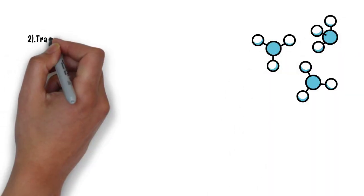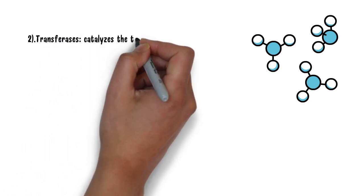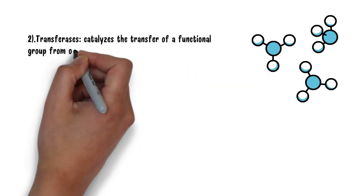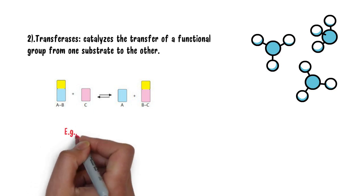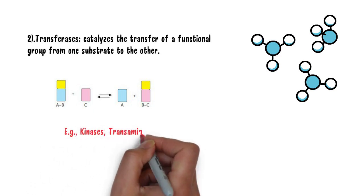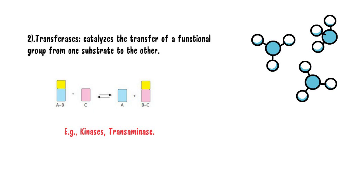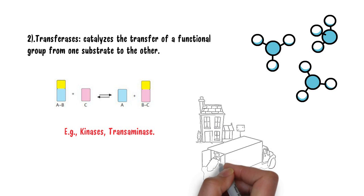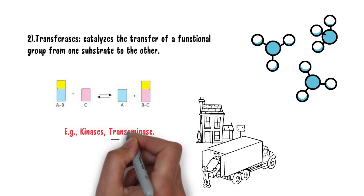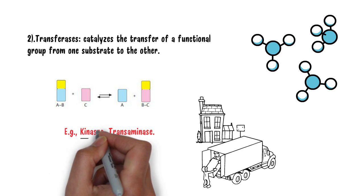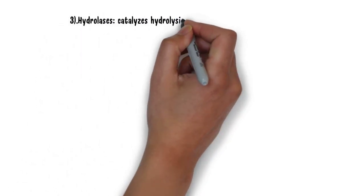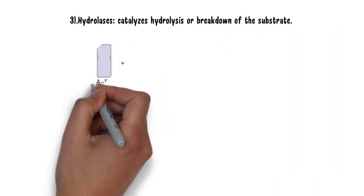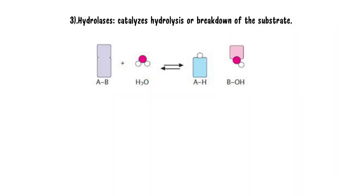The next mnemonic is for the second category — transferases. As you all know, transferases catalyze the transfer of a functional group from one substrate to the other. The examples are transaminases and kinases. To remember this, just remember the statement: 'You get transferred to a kin's place.' 'Transfer' will help you remember transferases and transaminases, and 'kin' will help you remember kinases.